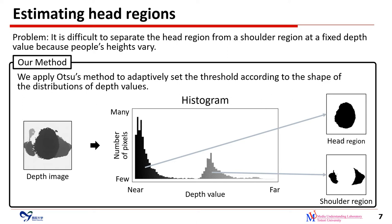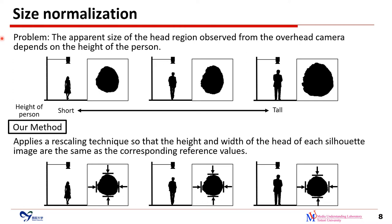We estimate the head region of a standing person from depth images in a video sequence. It is difficult to separate the head region from the shoulder region at a fixed depth value because people's heights vary. In the camera setting, the head is closer to the depth camera than the shoulders. We assume that the histogram of depth values in the person region has two peaks of distribution. We apply Otsu's method to adaptively set the threshold according to the shape of the distributions, and set the head region using pixels with depth values smaller than the adaptive threshold.